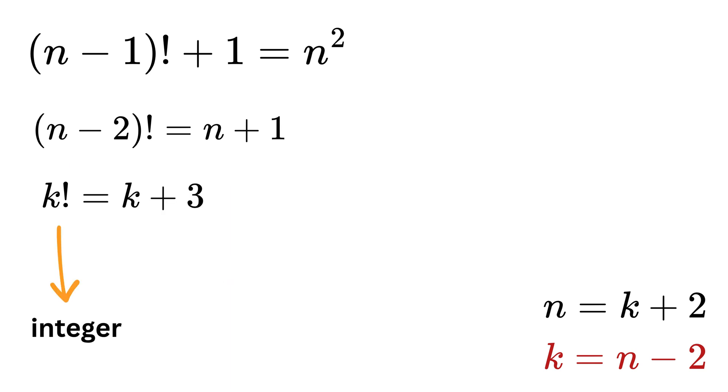Now, obviously, this left-hand side is a factorial, which is an integer, and hence k plus 3, or the right side, must also be an integer, which implies k is also an integer.